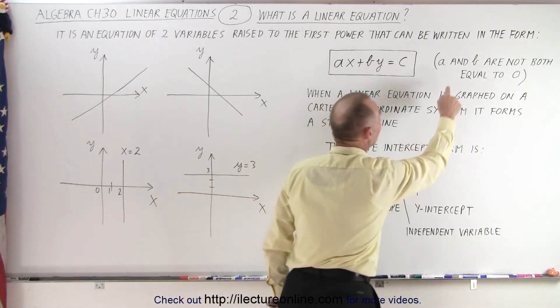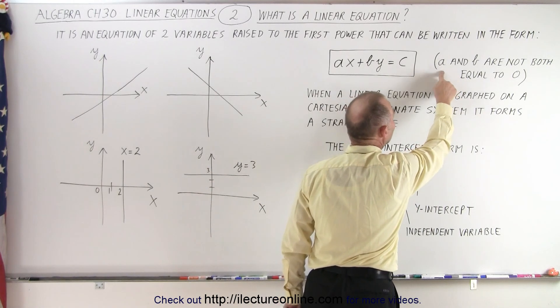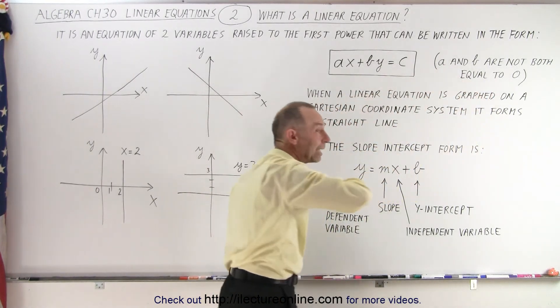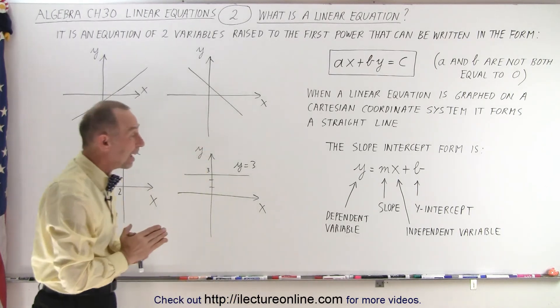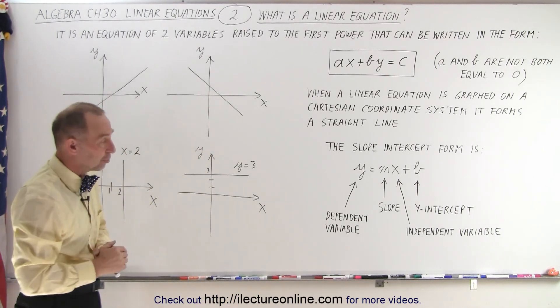That's why we have to have the condition that not both a and b can be zero. A can be zero or b can be zero, but they can't both be zero at the same time. Otherwise, again, we don't have a linear equation.